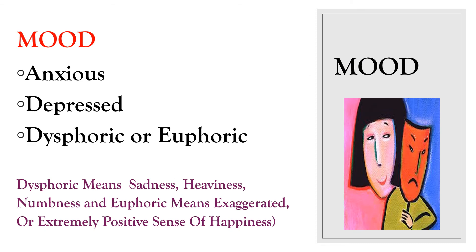Under mood, check whether the patient is anxious, depressed, dysphoric, or euphoric. Dysphoric means sadness, heaviness, and numbness — sitting with no or very little response. Euphoric means exaggerated or extremely positive sense of happiness, over-excitement, and over-activity. Write which of these states the patient is presenting.